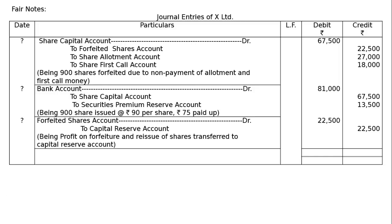Then profit transfer: forfeited shares account debited to capital reserve account. The Rs. 22,500 in the forfeited shares account from entry number 1 is the profit. We collected that and did not allow any discount on reissuance — we reissued the shares at a premium. Hence Rs. 22,500 will be transferred. Being profit on forfeiture and reissuance of shares transferred to capital reserve account. The total is Rs. 1,71,000 both debit and credit. This is the final answer.